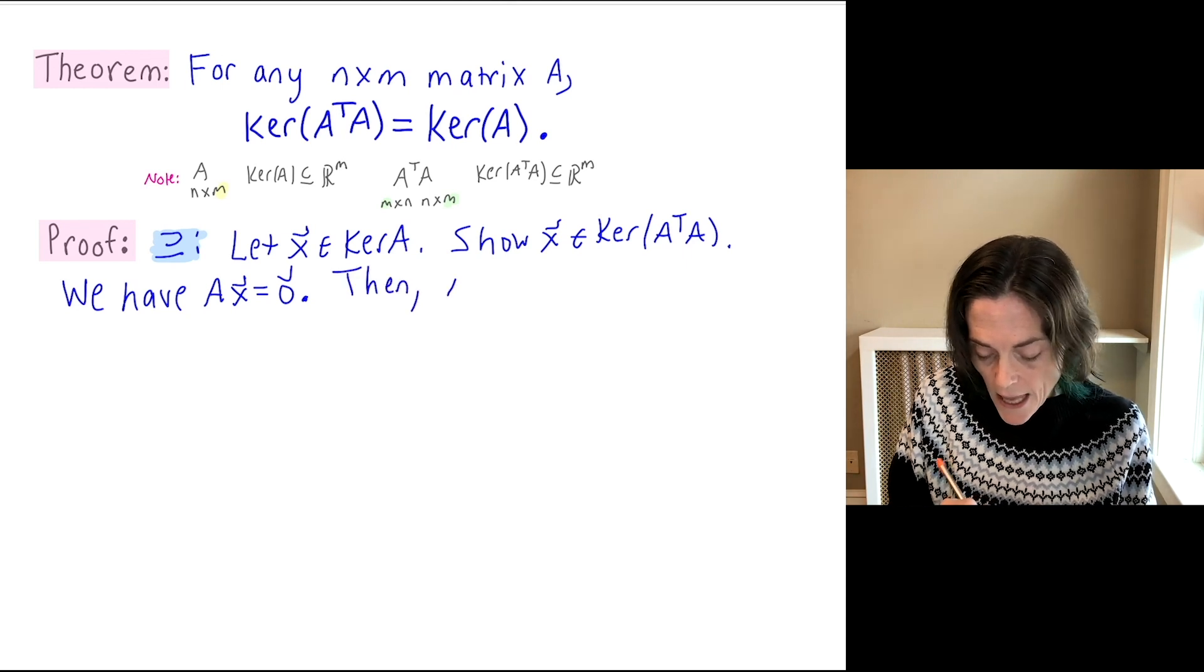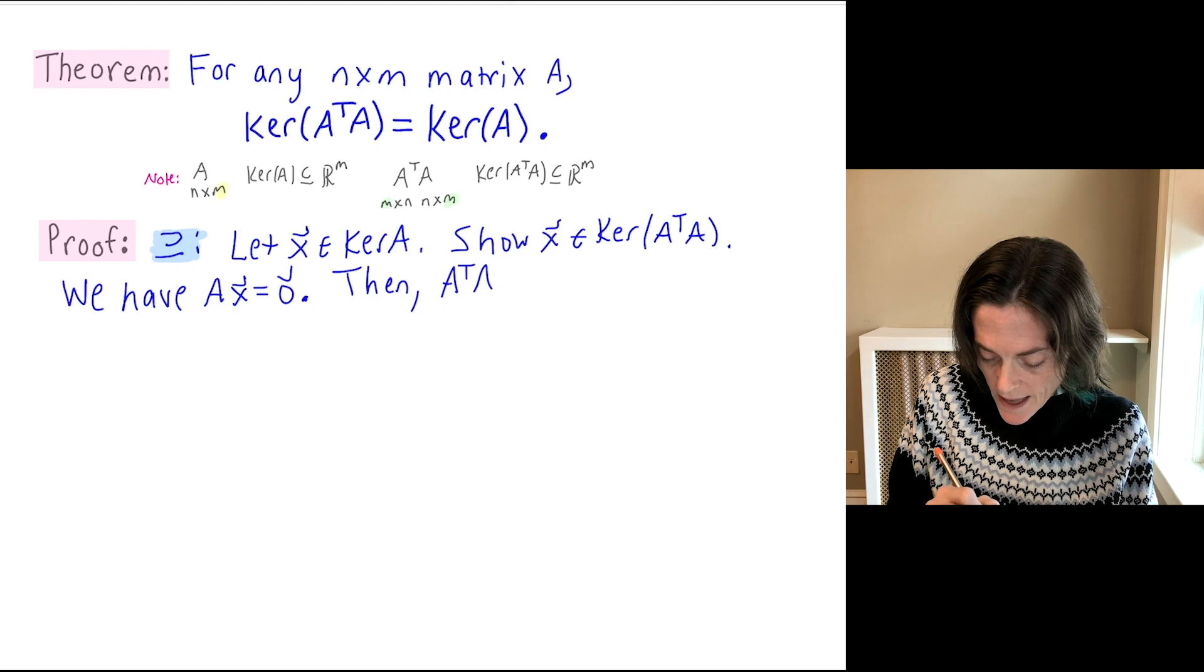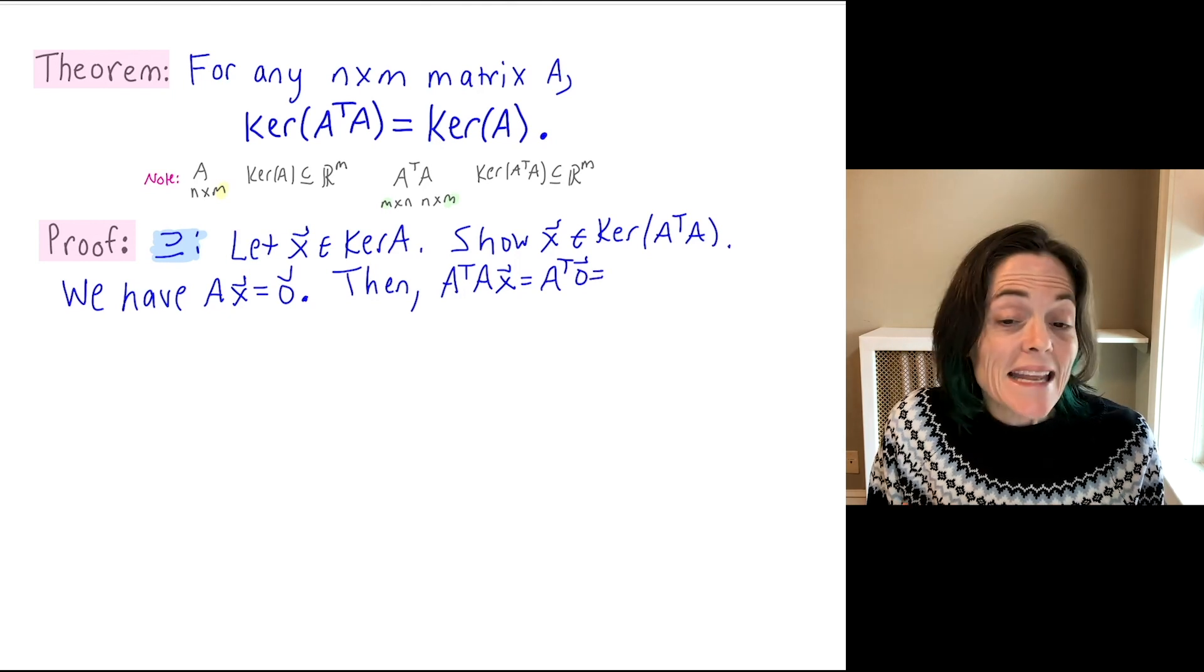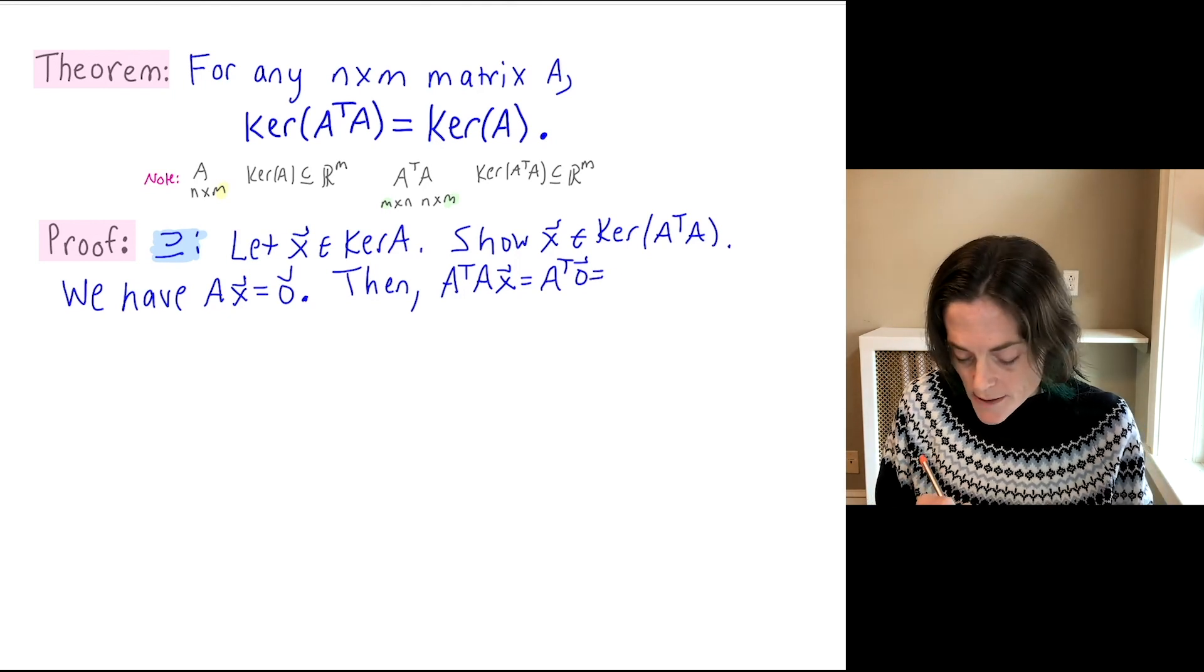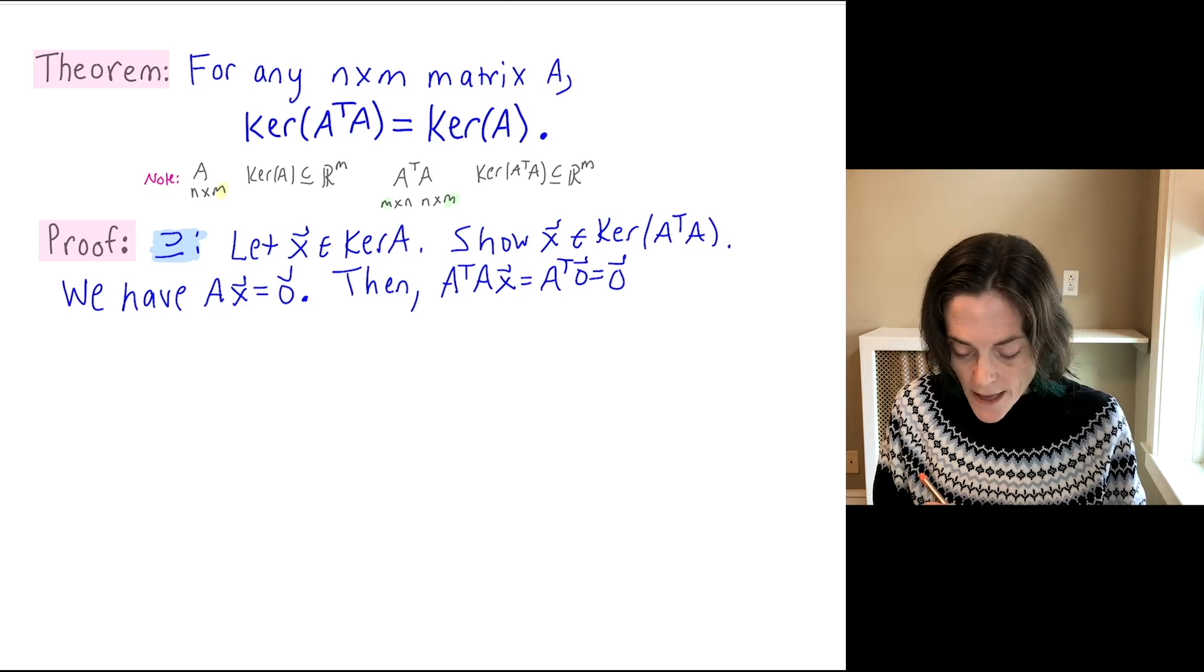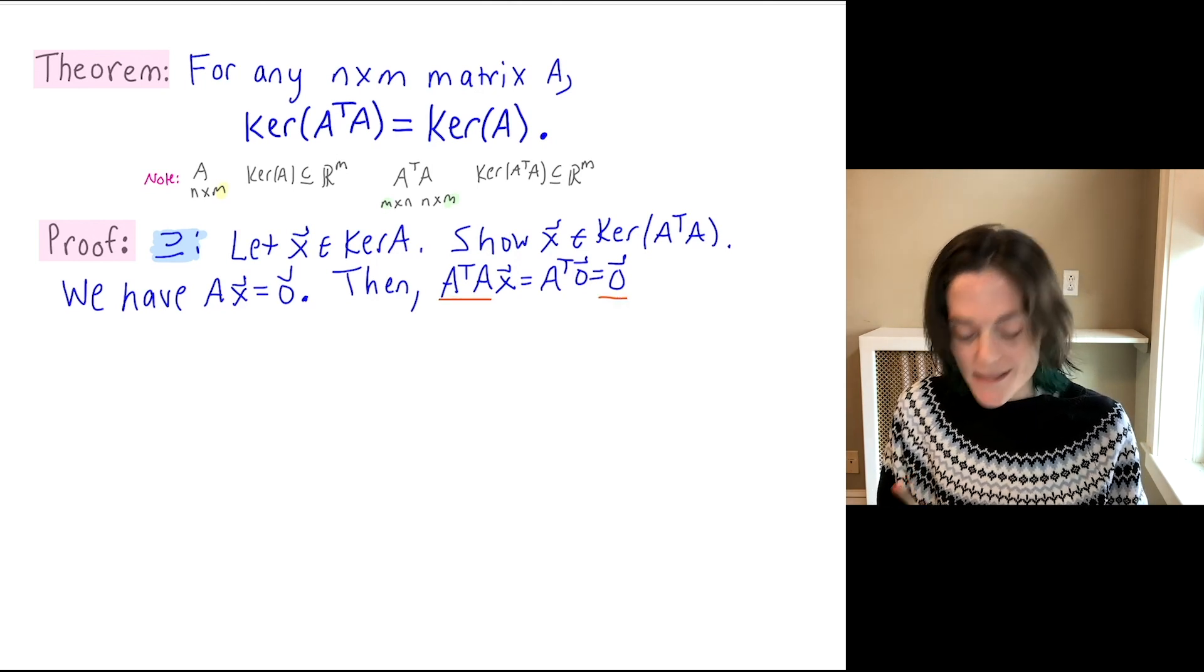So then A transpose A x equals A transpose times zero. But any matrix times the zero vector is zero. And so look what we have here. We have A transpose A times x is zero.